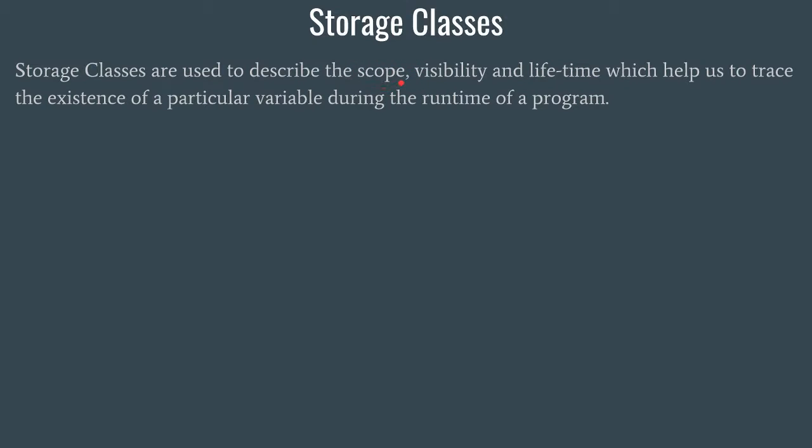Let us first understand what is the meaning of scope. If I try to explain in a very realistic manner — many times you must have seen in some of your books it's written that this content is out of the scope of this book. That means the content was not designated for that particular syllabus or for that particular book. So that becomes out of scope. Similarly, in programming, scope basically means something which is out of bound of some other block.